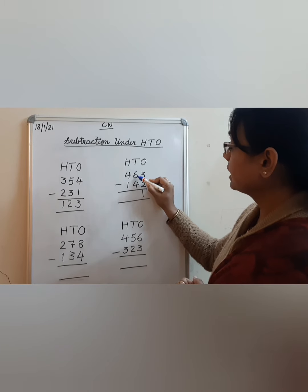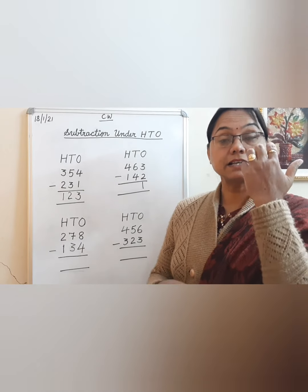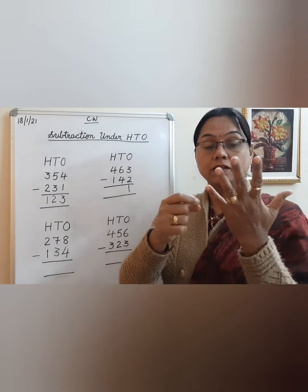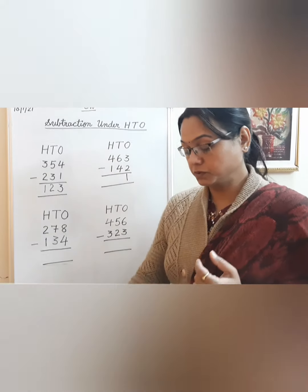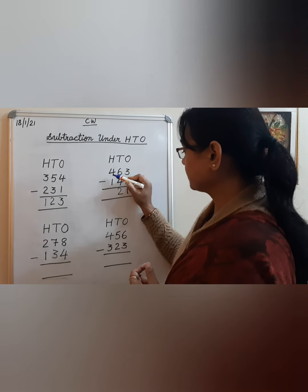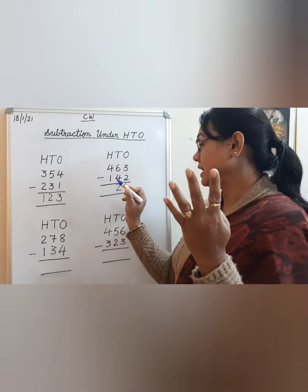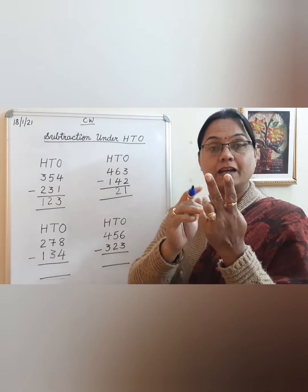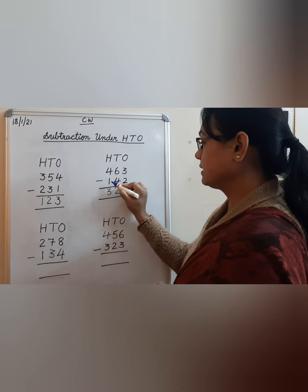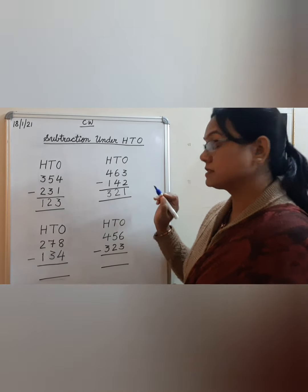Then move to the tens place: 6 minus 4. Take out 6 fingers — 5 and 6 — and subtract 4: 1, 2, 3, and 4 — how many are left? 1 and 2, so write 2. Then move to the hundreds place: 4 minus 1. Take out 4 fingers and subtract 1 — how many are left? 1, 2, 3. So 463 minus 142 is equal to 321. This is the answer.